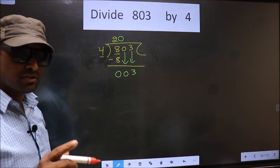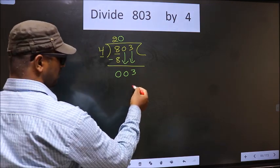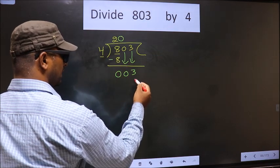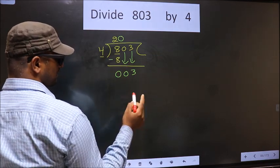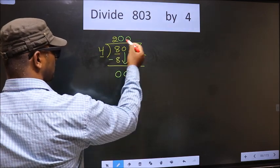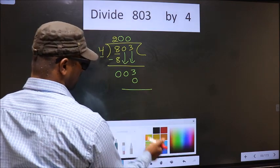Instead, what you should think of is: what number should we write here? If we write 4 here, that is larger than 3. So what we do is we take 0 here. So 4 into 0 is 0. Now you subtract: 3 minus 0 is 3.